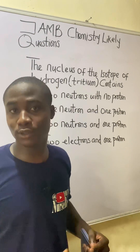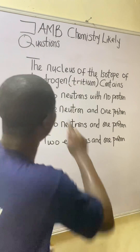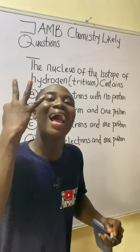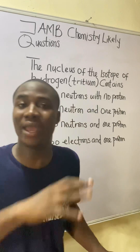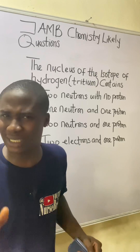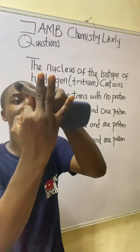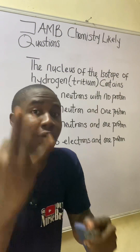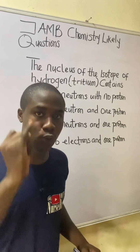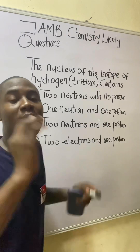Moving further, it must be noted that the element hydrogen exists in three isotopic forms. Elements in chemistry can have various isotopes, and hydrogen is one that has three: protium, deuterium, and tritium.